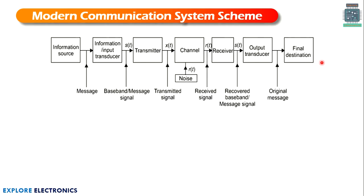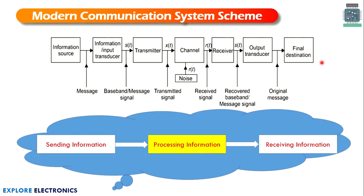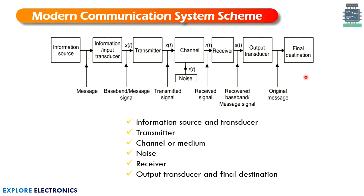The steps can be categorized into three parts: sending information (the message), processing the information between the input transducer and the output transducer, and receiving the information. Processing information contains different methodologies to transmit the message from one end to the other. The components are: information source, input transducer, transmitter, channel (where noise is included), receiver, and finally the output transducer, which delivers the message to the destination.